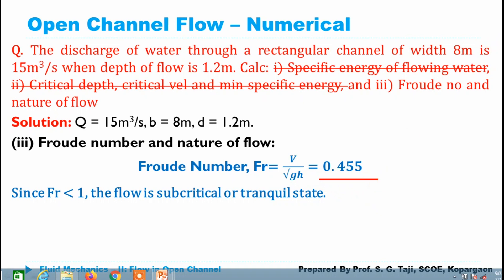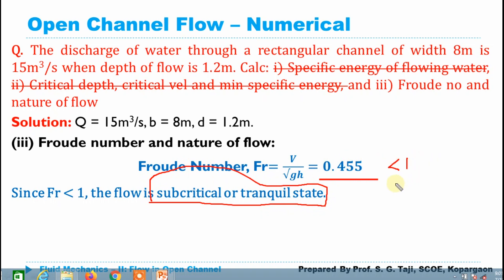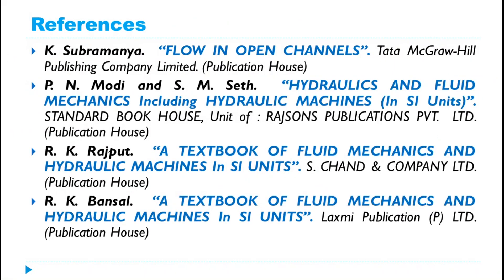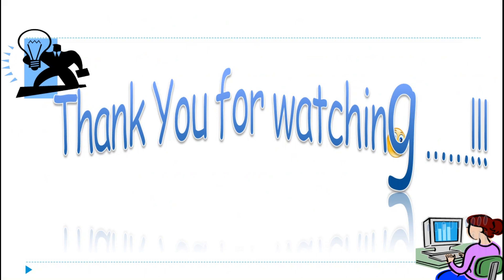If the Froude number were greater than 1, the flow would be supercritical. I hope you understood the derivations, formulas, and this numerical example. Those are the references used during the preparation of this presentation. Thank you for watching.